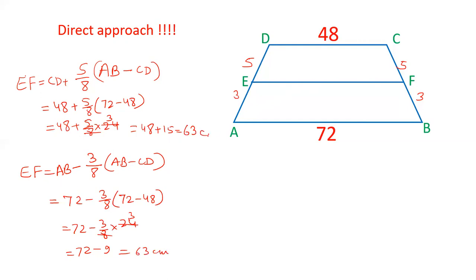So we can find out the length of EF by adding the difference in the ratio of 5 to 3. So 5 by 8, AB minus CD, difference of the two and add to the smaller. So how to find out or how to decide which part has to be added, which part has to be subtracted? This is the smaller side. When the ratio near the smaller side is 5 and ratio near the larger side is 3, so 5 by 8 will be added and 3 by 8 will be subtracted. Both will give the same. This is the direct approach.